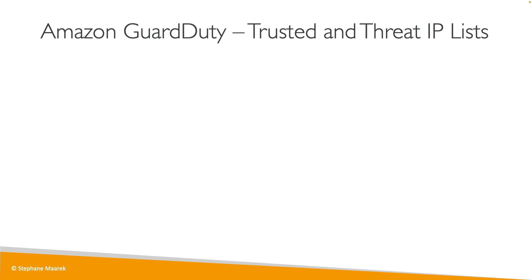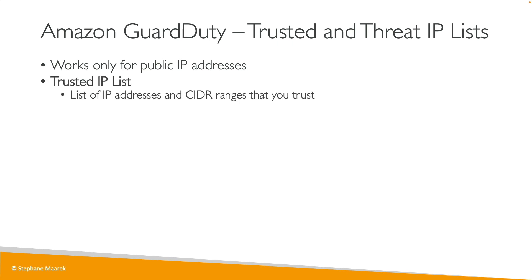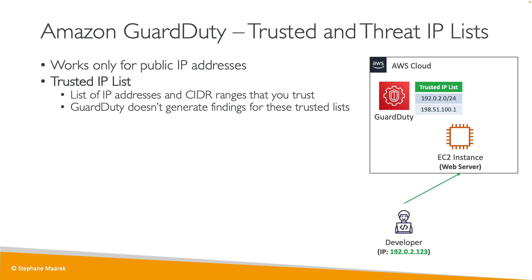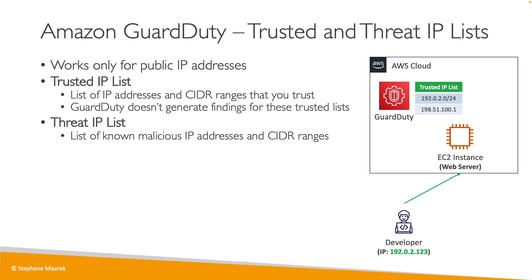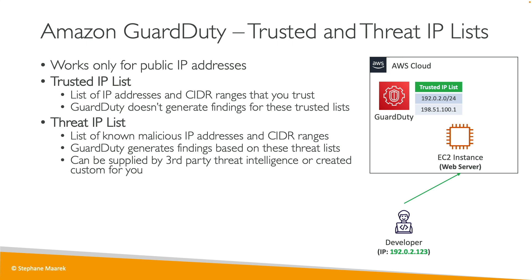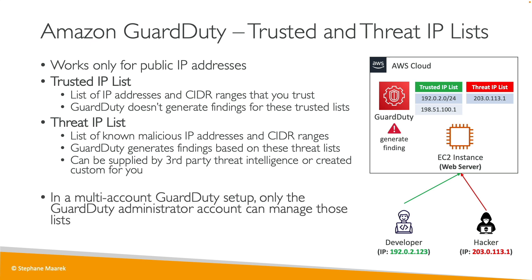GuardDuty also has the concept of trusted and threat IP lists — this only works for public IP addresses. A trusted IP list contains IP addresses you trust; GuardDuty will not generate findings for these, allowing developers to perform tests on your EC2 instance without generating security findings. A threat IP list contains known malicious IP addresses and CIDR ranges; GuardDuty will generate findings based on this list. It can be supplied by a third-party intelligence provider or created custom by you. In a multi-account setup, only the GuardDuty administrator can manage these lists.